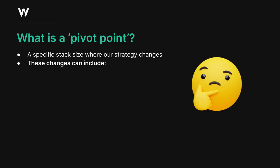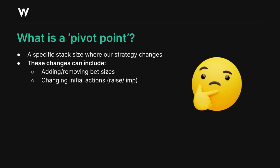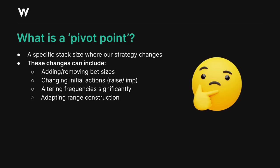This could include any type of change, such as adding or removing specific bet sizes, changing initial preferred actions such as switching from raising to limping, altering our frequencies, or adapting the overall construction and makeup of our ranges. You'll see plenty of examples of this over the course of this video, with the most significant probably being the introduction or removal of certain all-in or non-all-in raising ranges at different stacks.